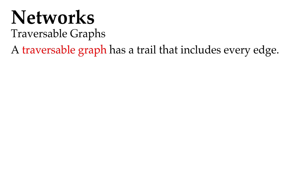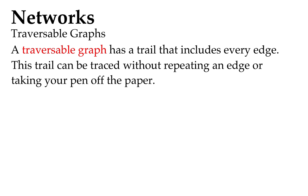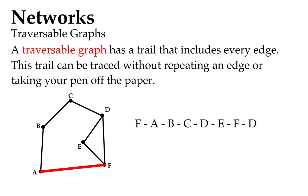Traversable graphs: a graph is traversable if it includes every edge. The test for a traversable graph is whether you can trace it without taking your pen off the paper, getting around all the edges. So here's an example: we can go F, A, B, C, D, E, F, D. We can do all that without taking our pen off the paper and we included every edge and we didn't repeat any edges. So that's a traversable graph.